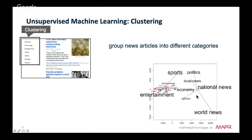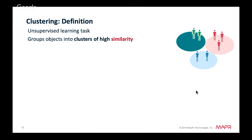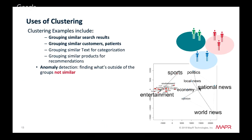Google News uses clustering to group news articles into different categories based on text content. Clustering algorithms discover groupings in collections of data by analyzing similarities between input examples. Examples include grouping search results, similar customers, similar text for categorization, similar products, and recommendations. Anomaly detection — finding what's outside of the group — is also a clustering use case.